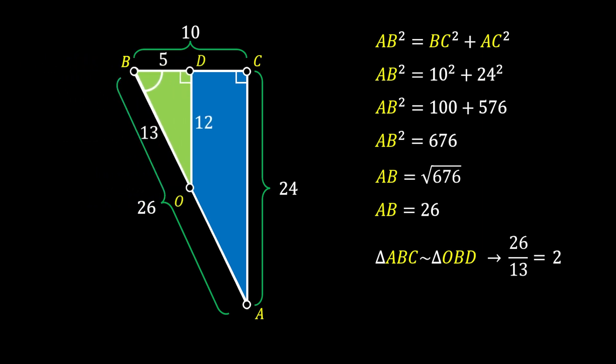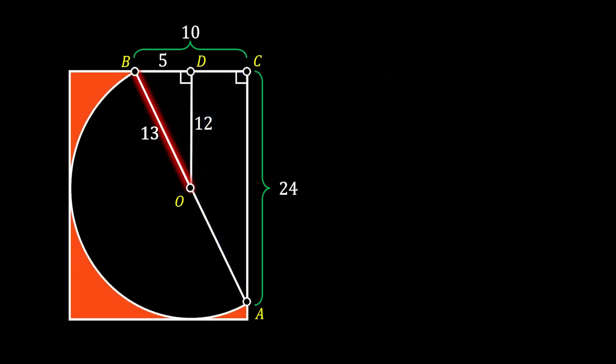Now let's head back to our previous sketch. The line BD has a length of 5, and since line BC has a length of 10, that means line DC must also have a length of 5. Now, let's rotate our radius OB to the intersection point between the arc of our circle and the left side of the rectangle. You can notice that the angle this radius forms with the right side of the rectangle is 90 degrees.